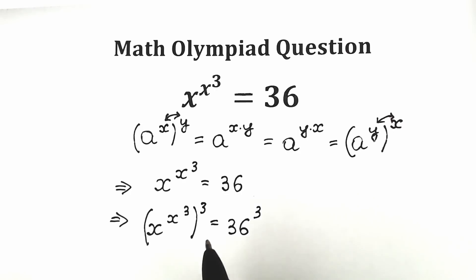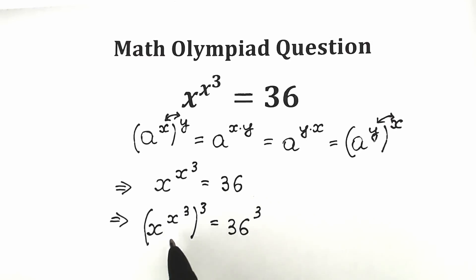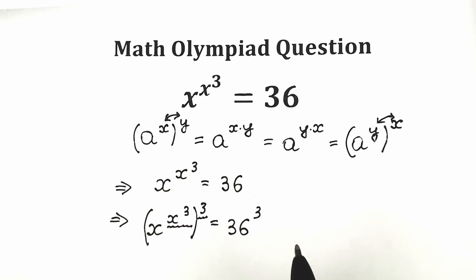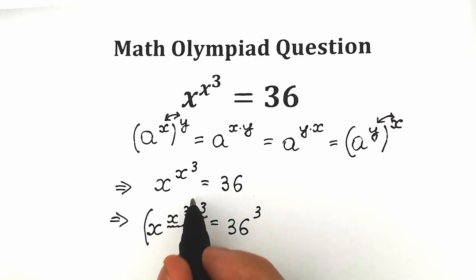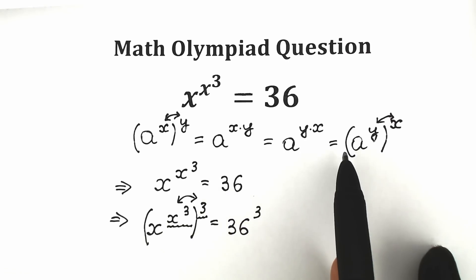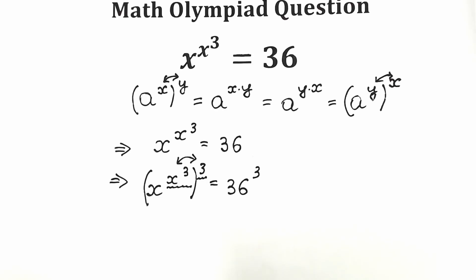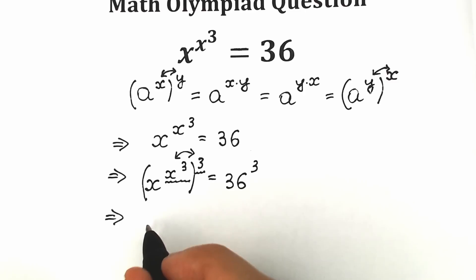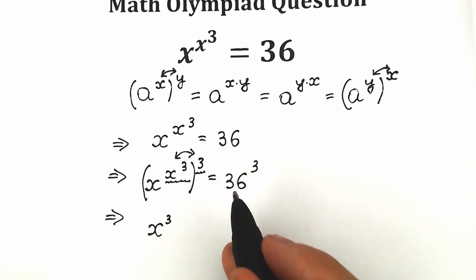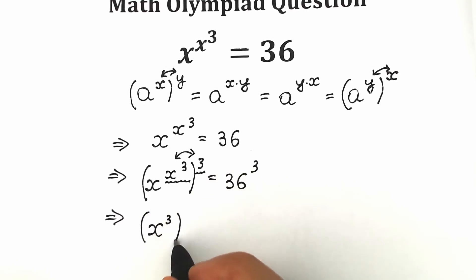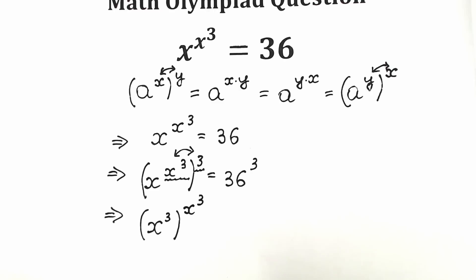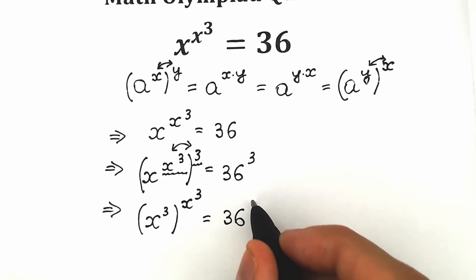It changes nothing because we raise both sides to the same power. Now let's look closely at the left expression and compare it to our property. Here we have x as our a, x cubed as our exponent, and 3 as our y. Saying in other words, we can swap this: the 3 goes inside the parenthesis and x cubed goes outside. As a result we have x cubed, raised to the power x to the power 3, equal to 36 cubed. On the right side, let's write 36 as 6 squared, raised to the power 3. We can multiply the exponents: 6 squared to the power 3 equals 6 to the power 2 times 3, which equals 6 to the power 6.